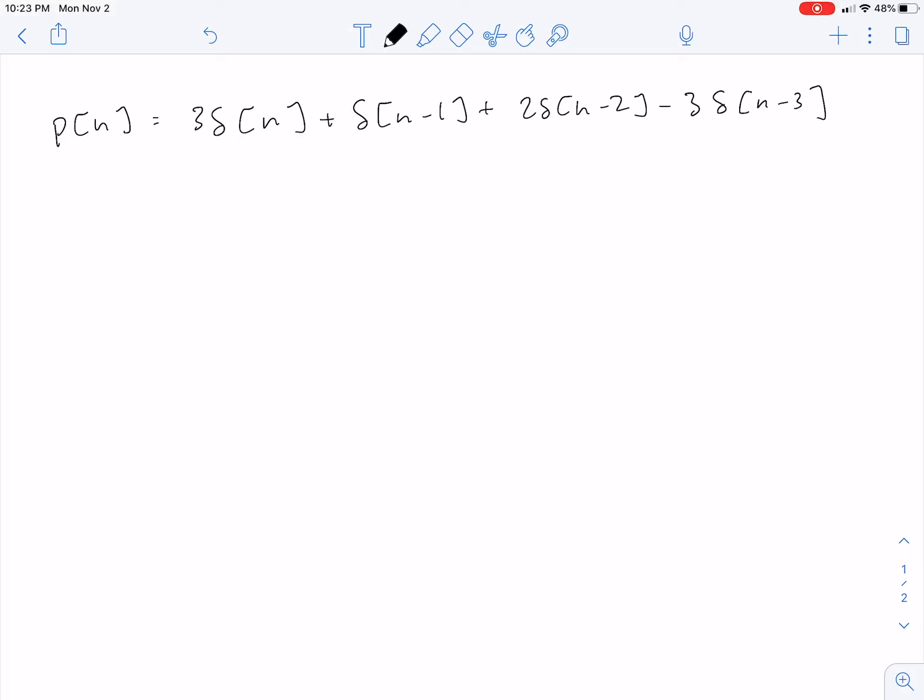So here I have my signal P of n, I have it written in terms of delta functions, and I want to find P of omega at some values of omega that are easy to evaluate. When you hear those terms easy to evaluate with respect to a DTFT, the omega values you should think of are zero and plus or minus pi.